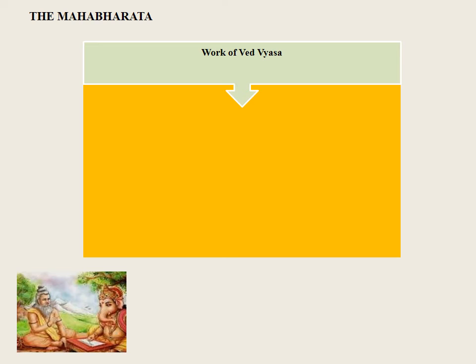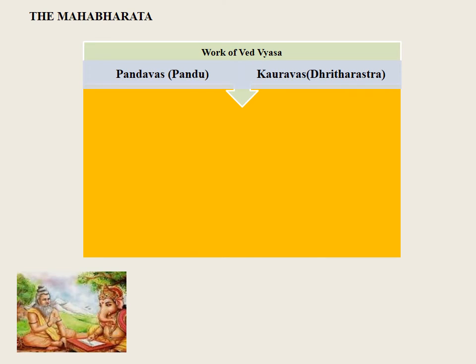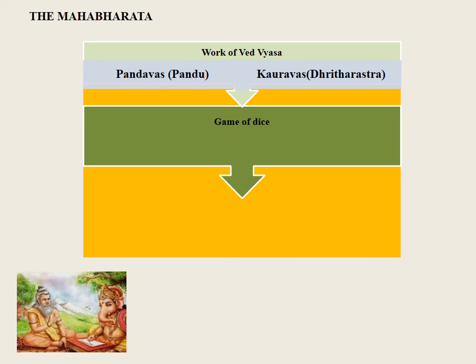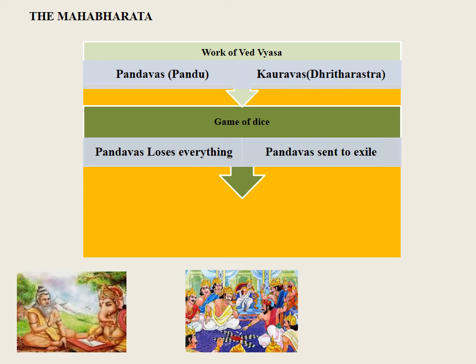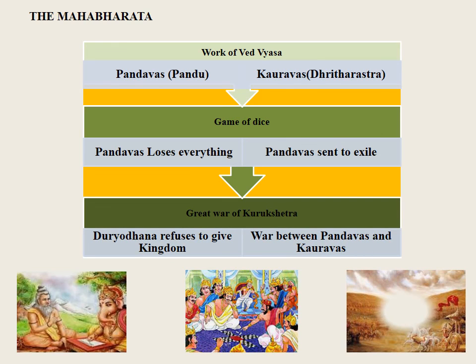The Mahabharata is believed to be the work of Vedavyasa. The main story is about the conflict between the Pandavas and Kauravas and the battle at Kurukshetra which involved many Aryan kings of the period. The Kauravas, always jealous of the Pandavas, invited them for a game of dice. The Pandavas lost everything and were sent to exile. After the exile period, Duryodhana refused to give the kingdom back, resulting in the great war of Kurukshetra, where the Pandavas won the battle and took back their kingdom.